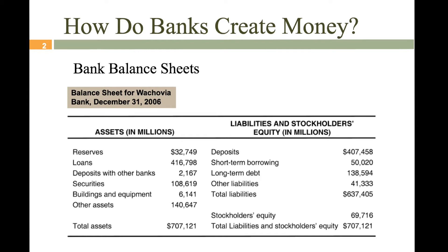If the required reserve ratio was 5%, then they would only need to have $20,000 on hand. If the required reserves amount was $20,000 and they actually have $32,000, then they have more than they need. So there's one more term you want to be familiar with, and that is excess reserves — as in having extra. So if $20,000 was their required reserves, this bank would have $12,749 in excess reserves.